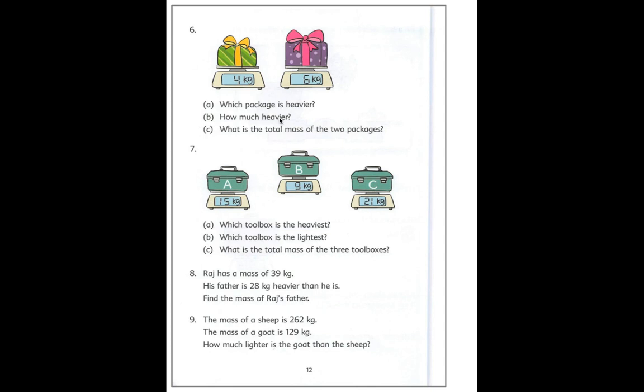I want us to also look at these pictures. Here we have a digital scale. So we have this package is 4 kilograms and this package is 6 kilograms. Which package is heavier? Well the purple package has a greater mass of 6 kilograms. How much heavier? You will compare them. So you would take 6 kilograms minus 4 kilograms which is 2 kilograms. Then it asks what is the total mass of the two packages. You just need to add 6 kilograms plus 4 kilograms which is 10 kilograms.